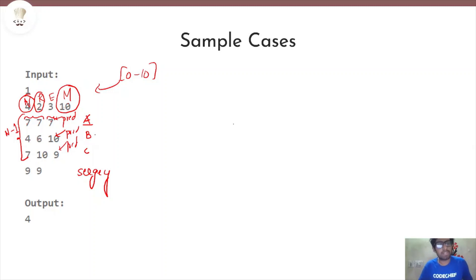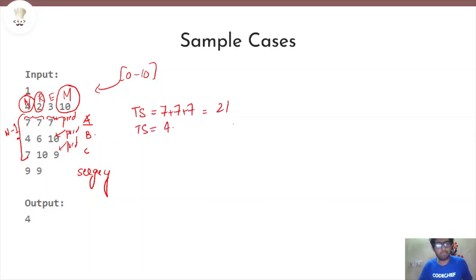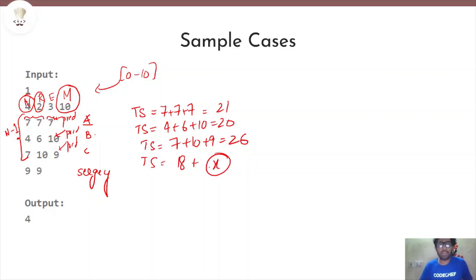Student B scored 4 out of 10 in the first exam, 6 out of 10 in the second exam, and the fortune teller says he'll score 10 out of 10 in the third exam. Student C scored 7 in the first, 10 in the second, and the fortune teller predicts 9 in the third. Computing totals: student A has 21, student B has 4+6+10 = 20, student C has 7+10+9 = 26, and Sergei has 18 plus X, where X is unknown since the fortune teller hasn't told us his score.